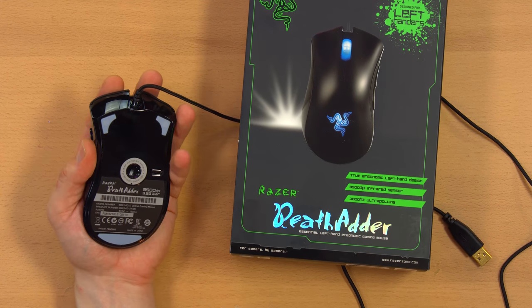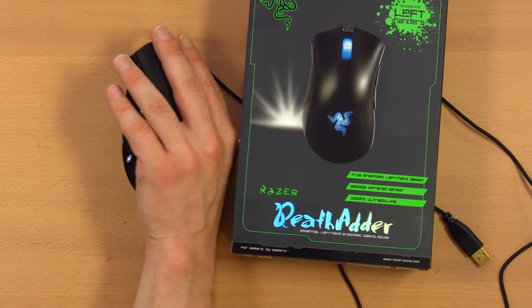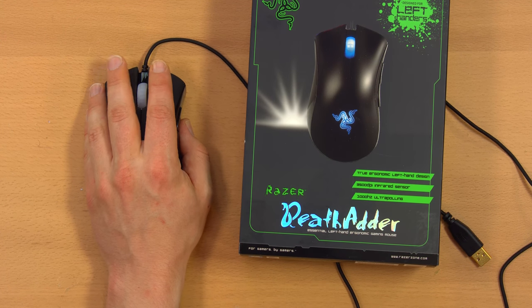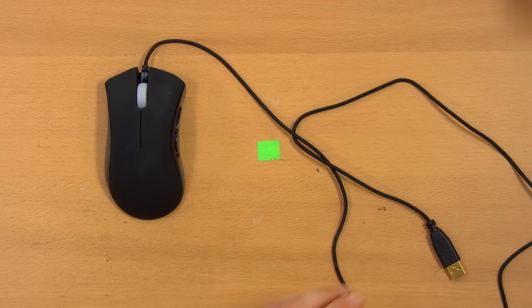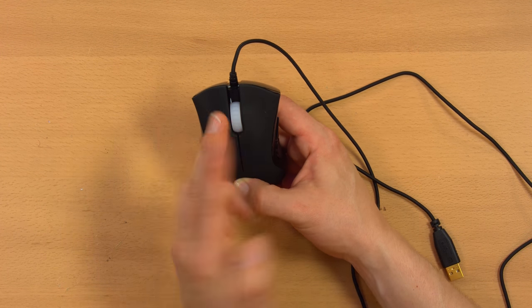Enter the Razer Deathadder Left-Handed Edition. It's just about the perfect size for me, being very similar to the MS mouse. Its slight contour makes it really comfortable, and it's very precise and quick as well. However, always having used right-handed mice in my left hand, I wasn't aware that the buttons are swapped on left-handed mice.